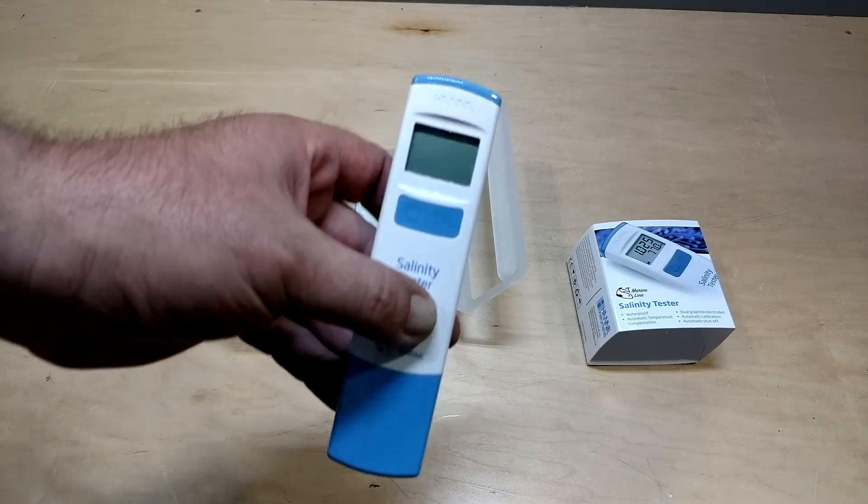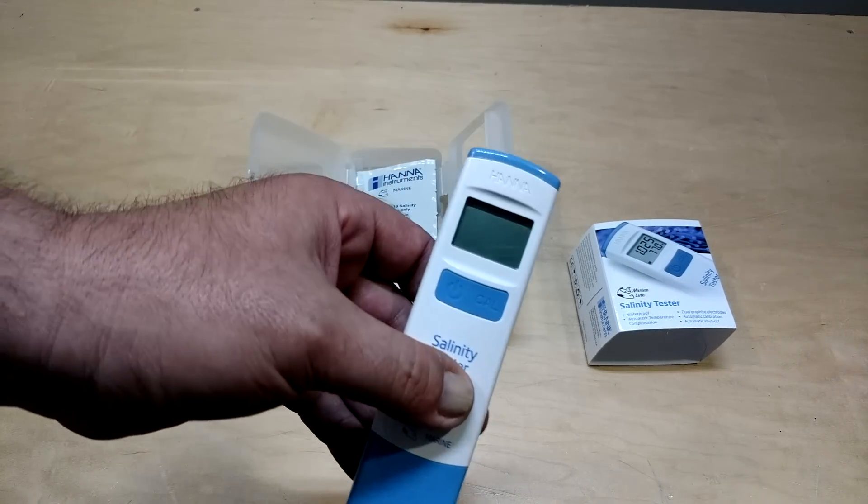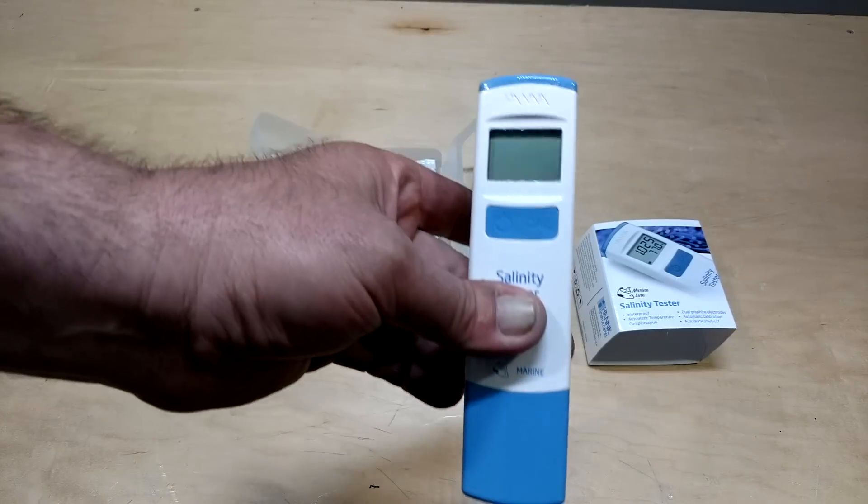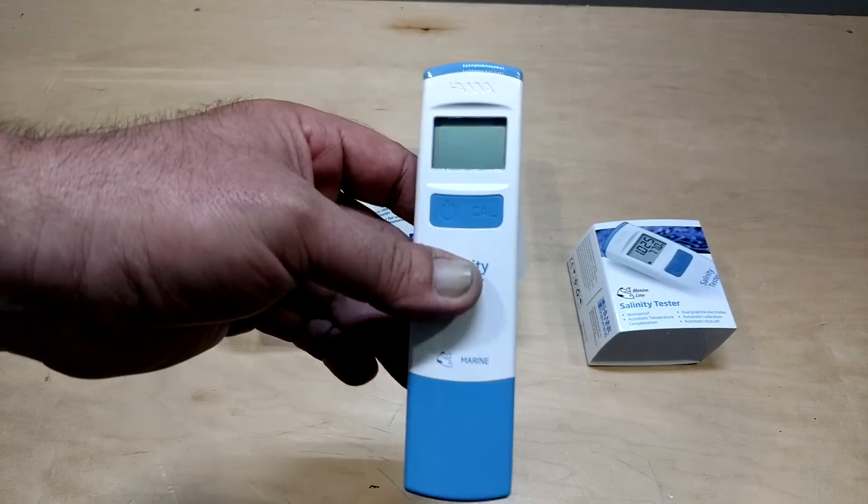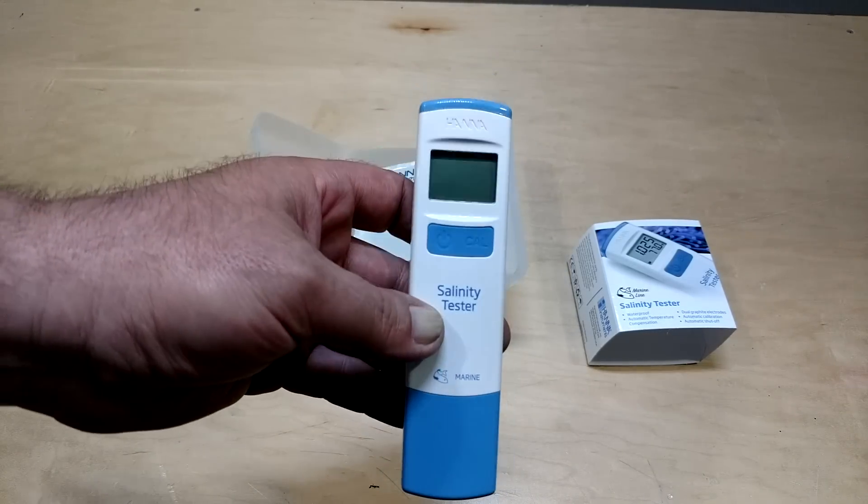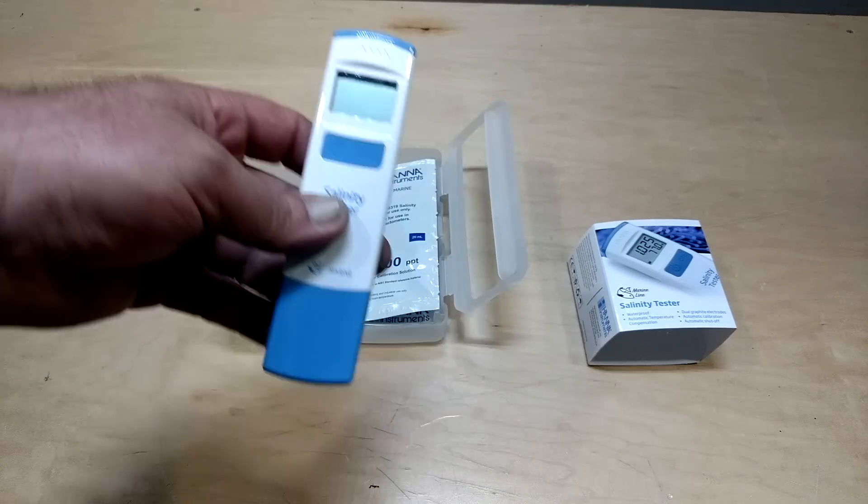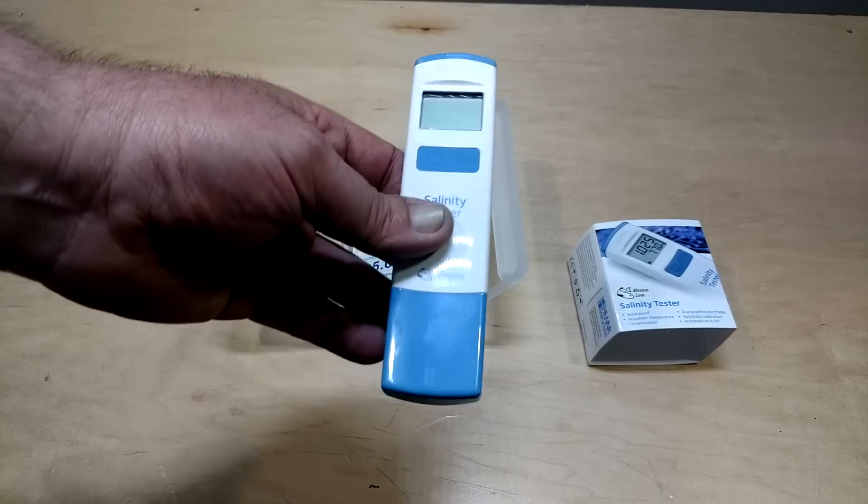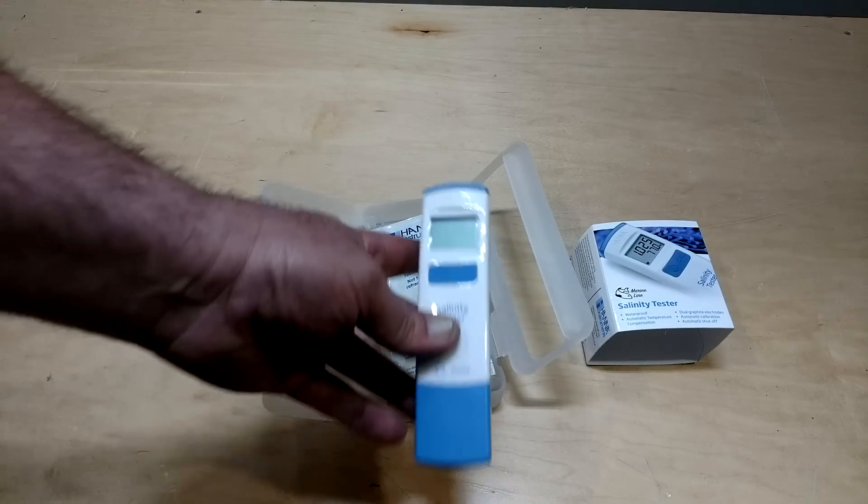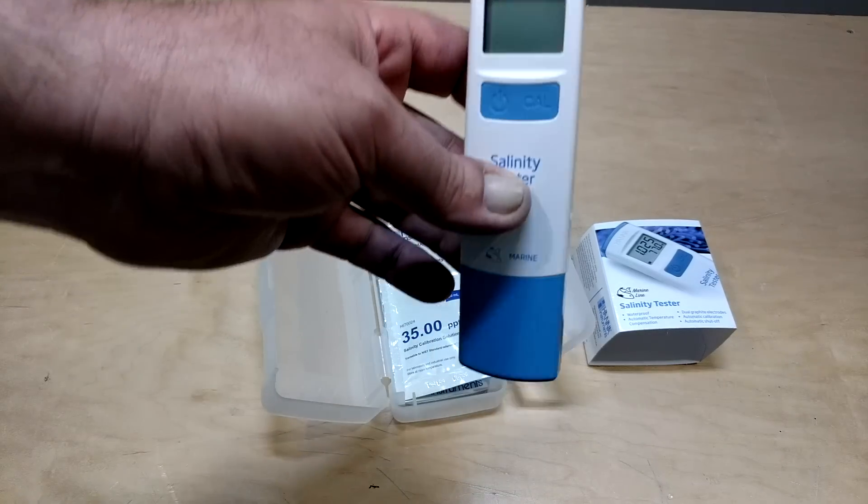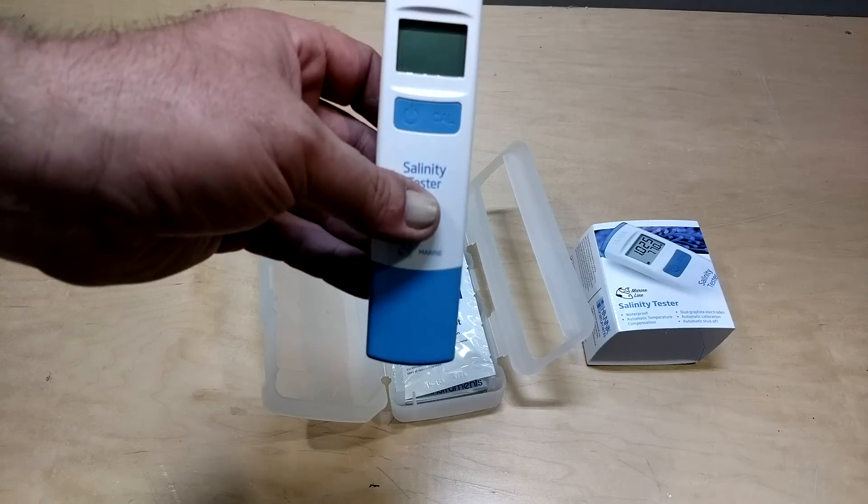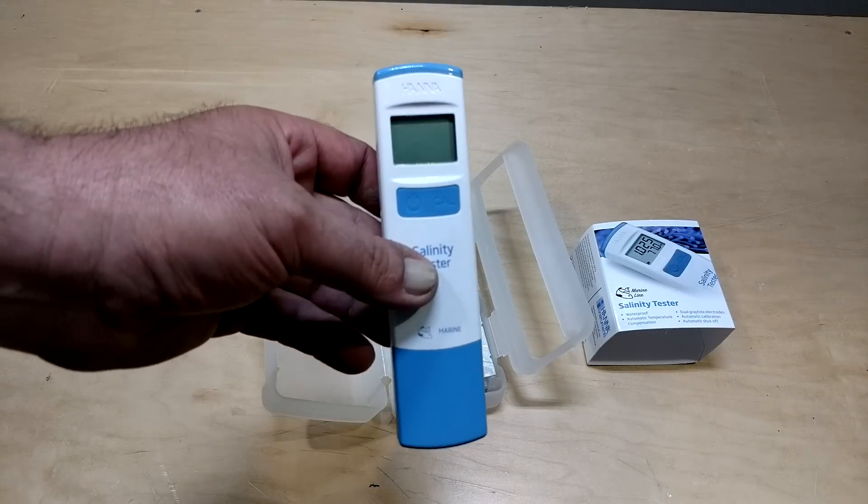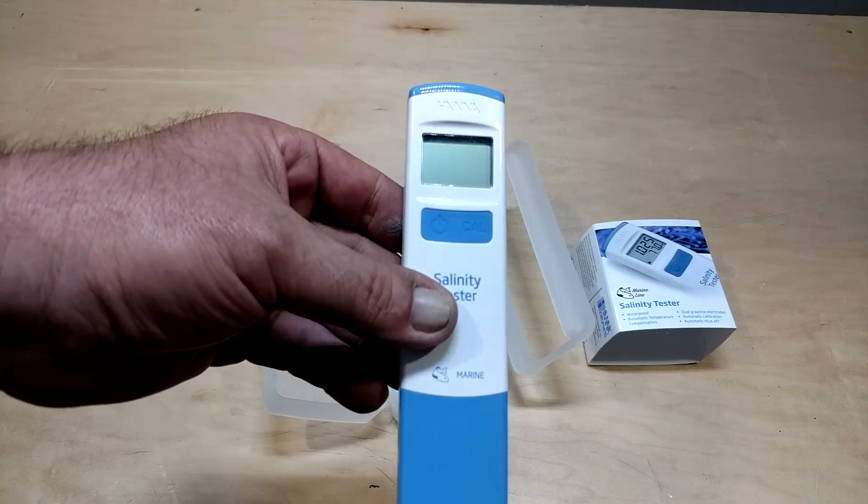So after you're done calibrating it, which is very simple by the way, once you get this product and you read the directions, or if you want to watch Fishy Snowman's video, he actually shows you how to calibrate it. It literally takes, with getting home, as soon as you open it, put it together, switch the Celsius if that's what you want, and calibrate it. You're testing the salinity in your tank in less than five minutes. It's awesome.